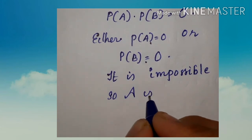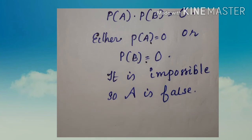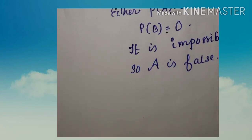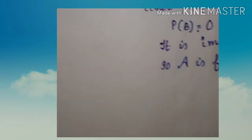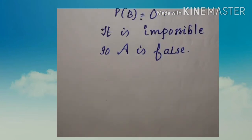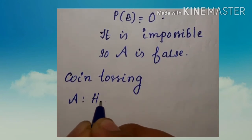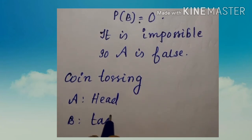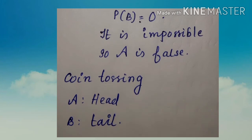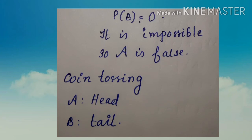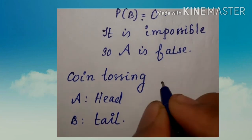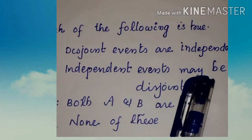So, A is false. Disjoint events may be independent only around trivial cases — I'm going to conclude here. If events are disjoint and both have non-zero probability, they cannot be independent, so statement A is false.